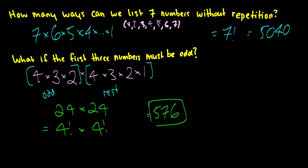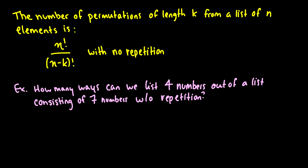You have to first pick your odd numbers, and then the rest of the numbers — after putting the remaining ones back in the pile, just because the condition is only that the first three numbers must be odd. The number of permutations of length k from a list of n elements is n factorial over n minus k factorial, and this is under the condition that there is no repetition.